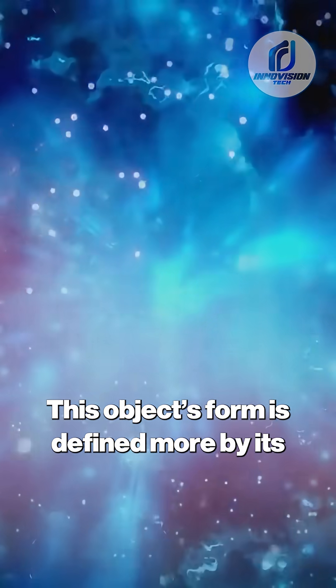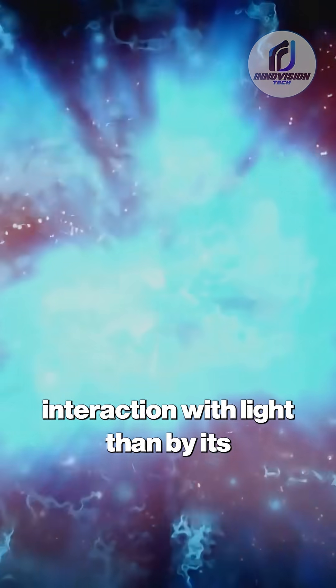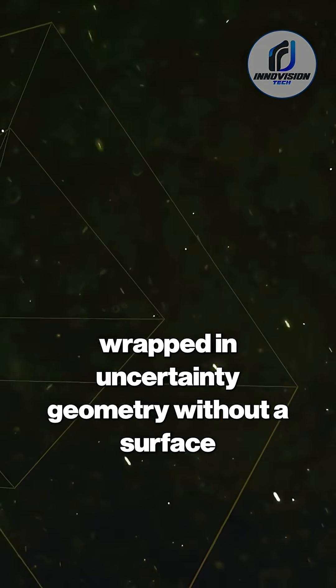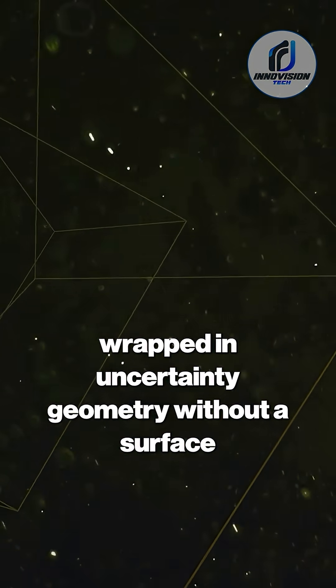This object's form is defined more by its interaction with light than by its physical boundaries. The shape stands as a physical clue wrapped in uncertainty, geometry without a surface.